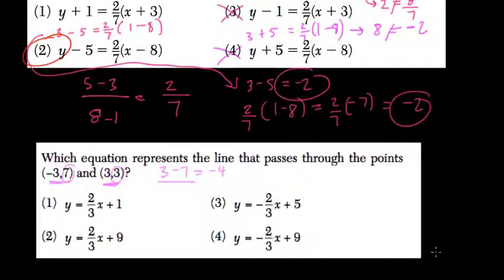Over the difference of the x's, 3 minus negative 3. Right? 3 minus negative 3, which is 3 plus 3, or 6. So we get negative 4 over 6, reduces to negative 2 thirds.